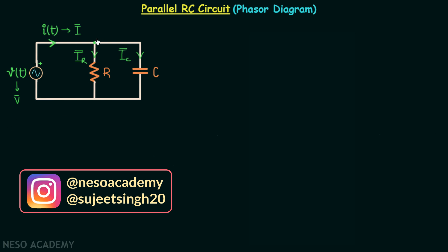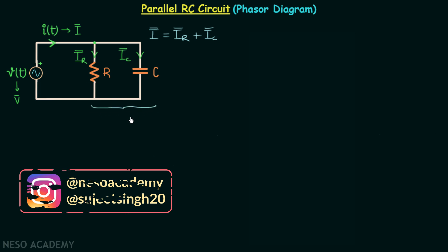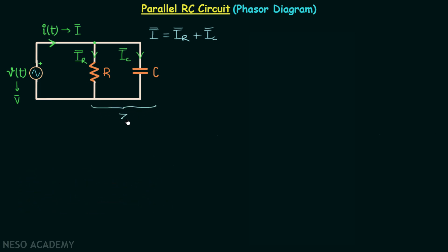When you apply KCL at this node you will have I phasor equal to IR phasor plus IC phasor. The resistor R and capacitor C together offer impedance Z, and when you divide the voltage phasor by the impedance you will have I phasor.